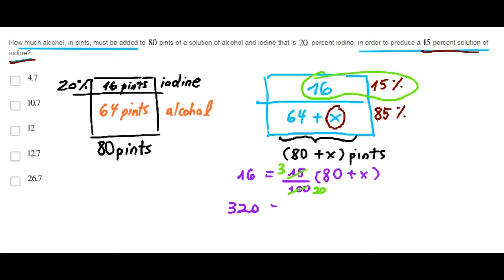Now, cross multiply. 320 equals 240 plus 3 times X. 3 times X equals 80.